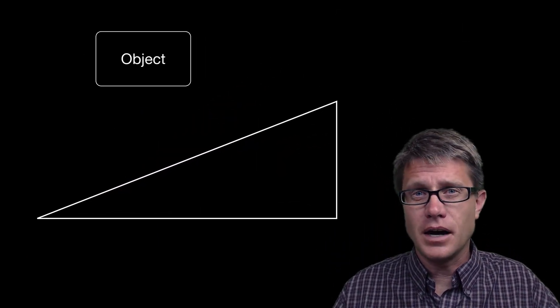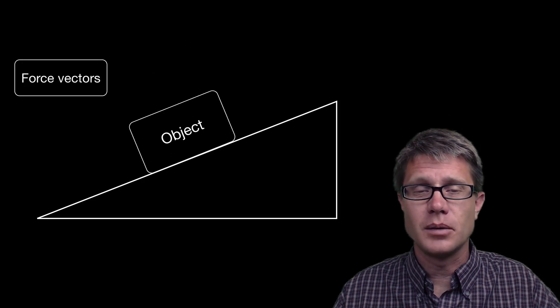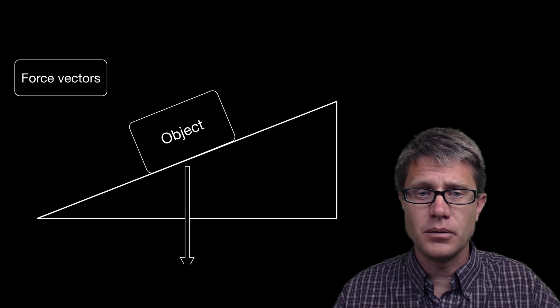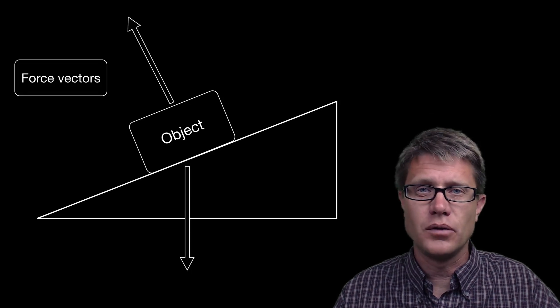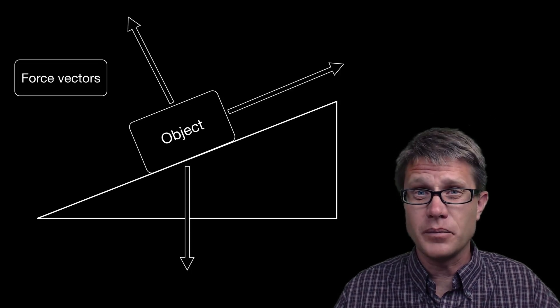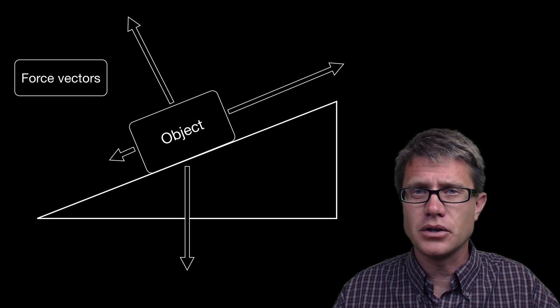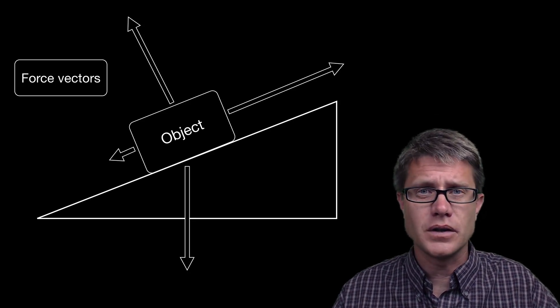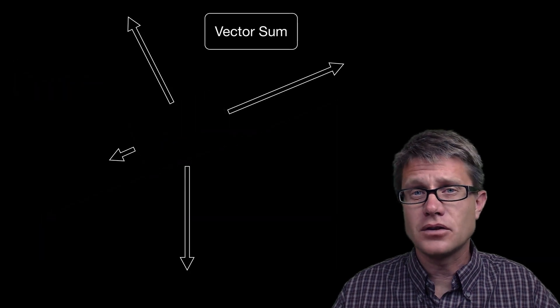And so if you have any object, let's take an object on an inclined plane and we look at all the force vectors acting on it. So let's quickly do that. We have got gravity. We have got a normal force. Let's say we are applying a force up the inclined plane and there is a frictional force in the other direction.